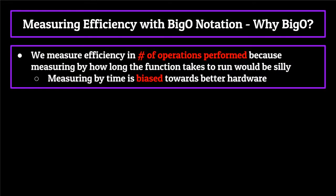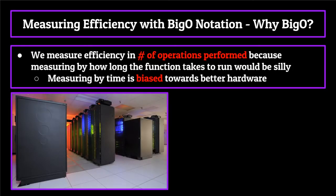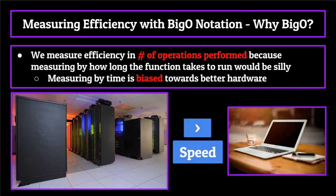We score these four functionalities in number of operations performed, because measuring by how long the function takes to run would be silly. If we measured by time taken to completion, our results would be highly biased by the hardware used to run the function. A supercomputer used by Google is obviously going to be able to search through a data structure much faster than a laptop. Time complexity equations essentially level the playing field by returning the number of operations to eliminate the bias in processing power.